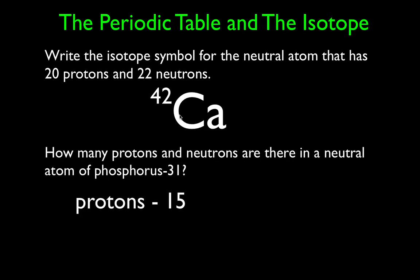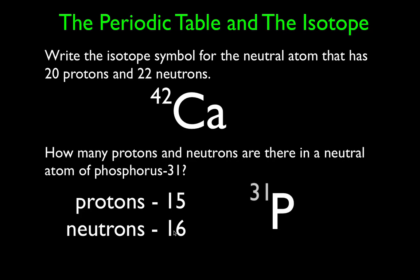Next: how many protons and how many neutrons are there in a neutral atom of phosphorus-31? This is another way we can write an isotope — the name followed by the mass number. We look on the periodic table, P for phosphorus, and notice that it is element number 15. Therefore, we know there are 15 protons. The mass number 31 is the number of protons and neutrons combined. If it has 31 protons and neutrons added together, 15 of those are protons, so the other 16 must be neutrons — because 15 plus 16 is 31.